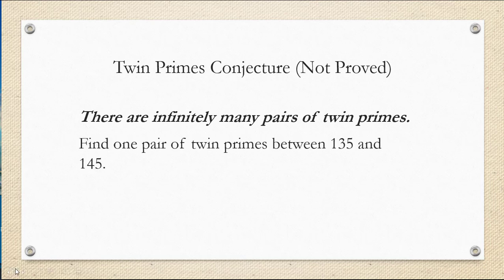If you're asked to find a pair of twin primes between a pair of numbers, here are some things to keep in mind. First of all, you only need to check odd numbers because we know that all even numbers are divisible by two and therefore are not prime. So in this example, where we're asked to find one pair of twin primes between 135 and 145...